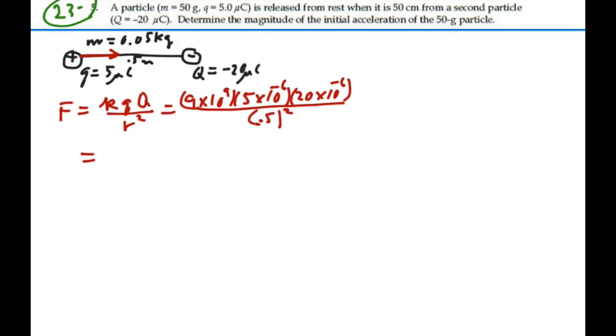So we have 9 times 10 to the 9 times 5 times 10 to the minus 6 times 20 times 10 to the minus 6 divided by 0.5 squared. 3.6 newtons to the right as I've drawn it.